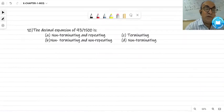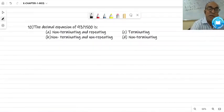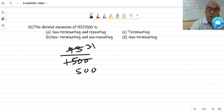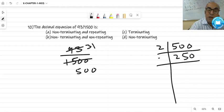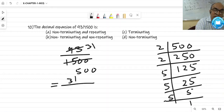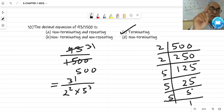Question 10. The decimal expansion of this, is it terminating or non-terminating? Here again you have to simplify first. Divide by 3, then by 5. Now factorize denominator. It equals 31 by 2 square into 5 cube. Denominator contains only 2 and 5, so it will be terminating decimal. This is the answer.